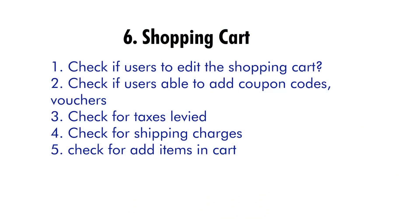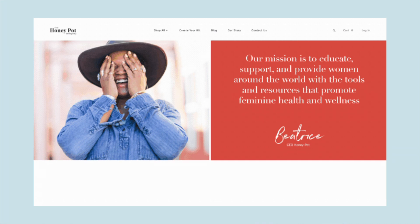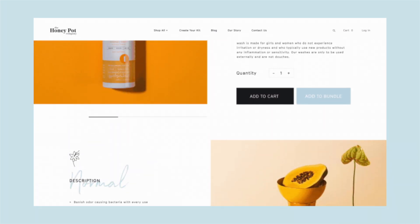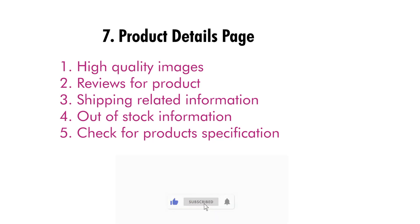Next is the product details page. Product pages should be articulate enough to interact with users and convert them into customers. The product page performs the salesperson's job by providing all relevant information about the product, including details, user specifications, properties, prices, and product images. Test the following: are the photos high quality and do they adequately represent the product? Are there reviews on the page? Has the page mentioned delivery and shipping information? If the product is out of stock, has it been indicated on the website? Does the page include all specifications?